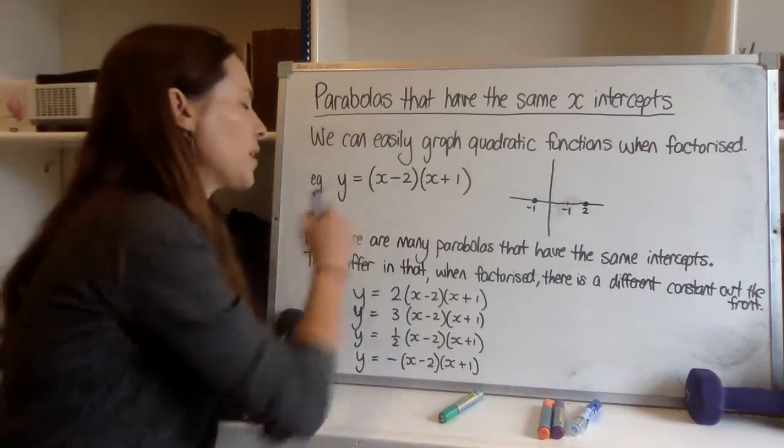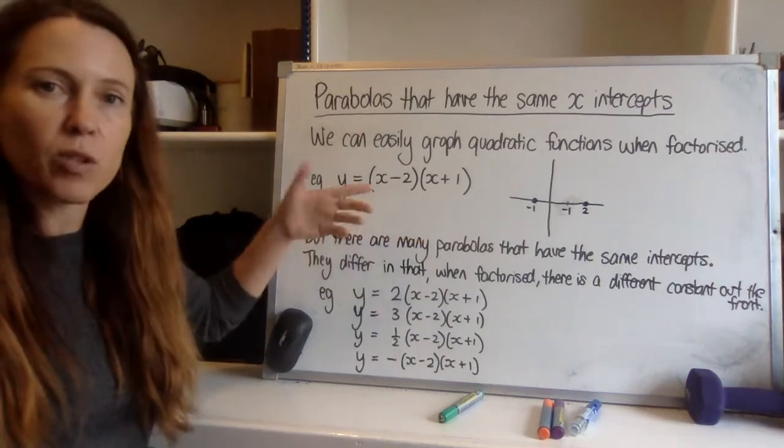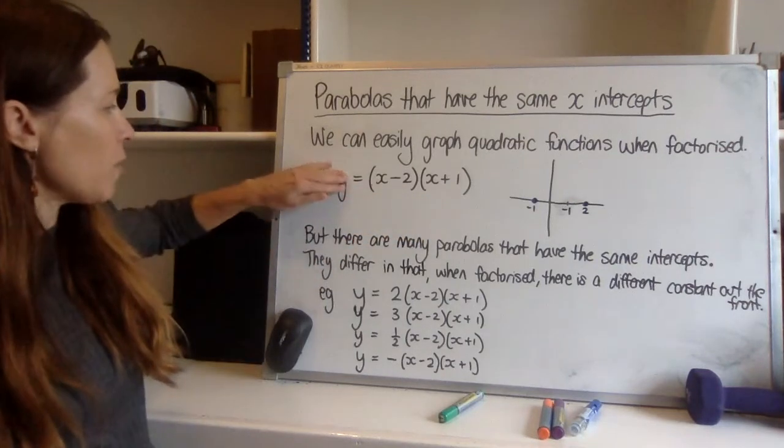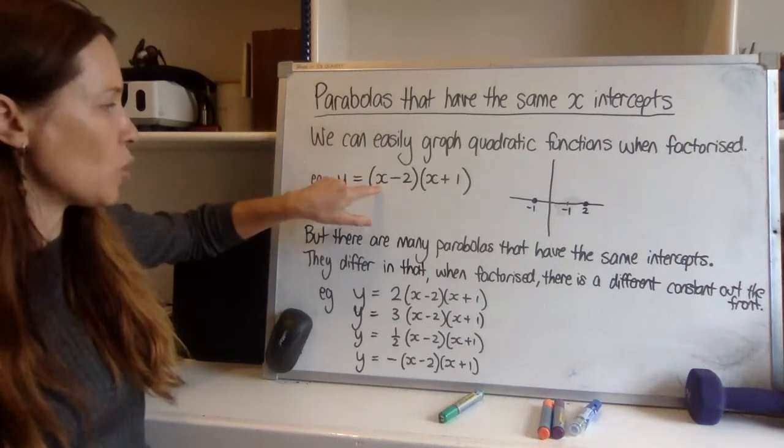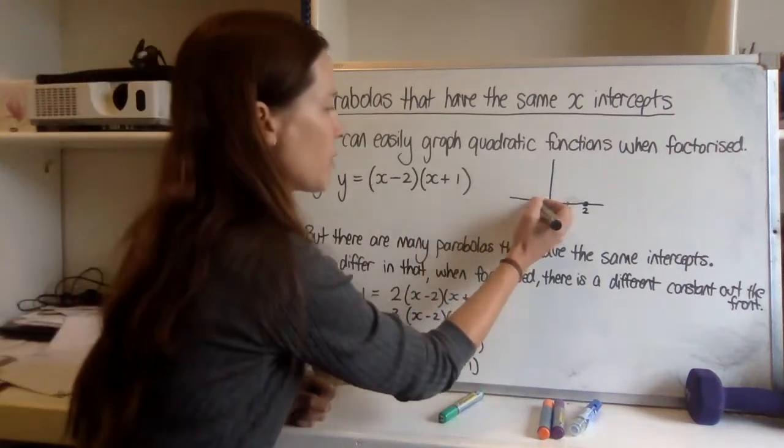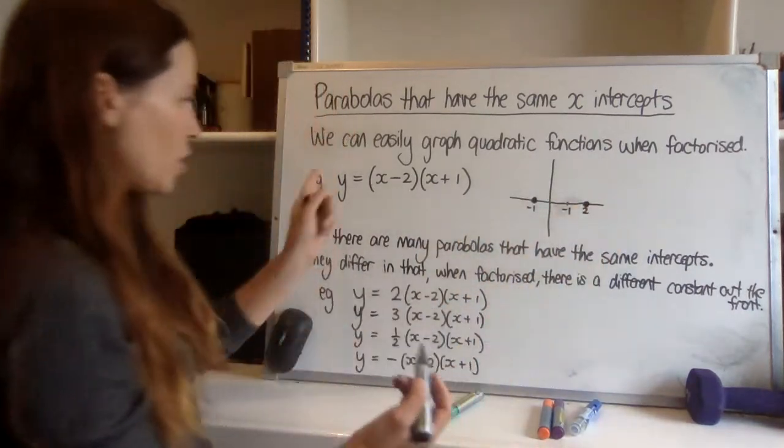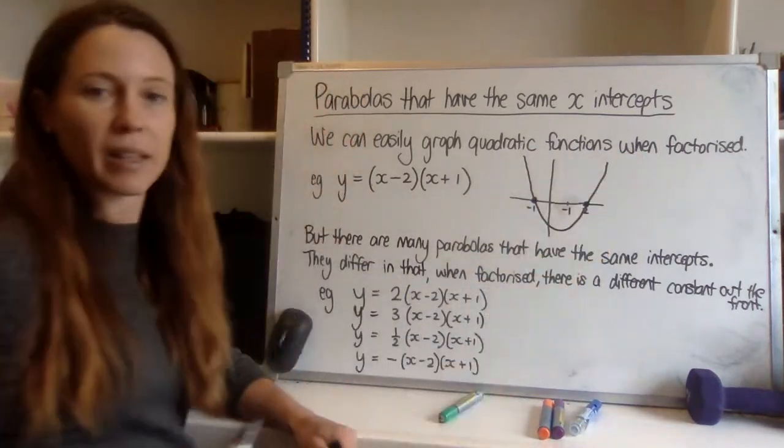But when we go to find the x-intercepts, we're going to be pleased that our work is already done for us, it's already factorized. So if we let y equal 0 and just imagine this being 0, we can see that x would need to be 2 or negative 1 to make that statement true. So we've got x-intercepts here and here. So for this graph we can easily graph it in and know that it looks something like this.